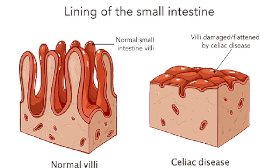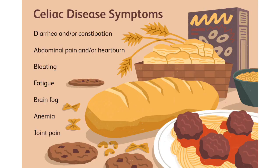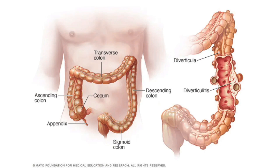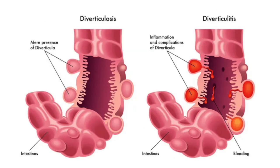Celiac disease is a chronic disorder that damages the small intestine. It can happen when a person with the disease eats food with gluten, and it can prohibit the body from getting all the nutrients it needs. Diverticulosis occurs when diverticula, or pockets and bulges that form on the colon wall, push outward through weak areas in the wall. Diverticulosis is characterized as diverticular disease only when symptoms, bleeding, or any troubles occur.